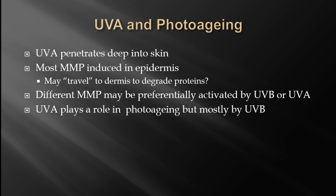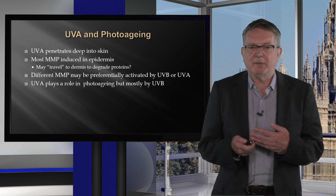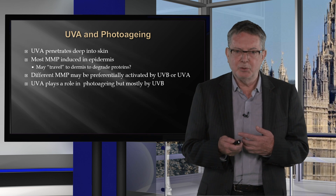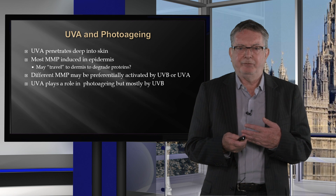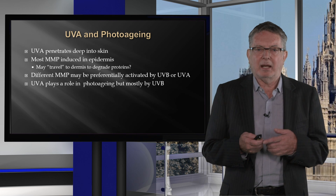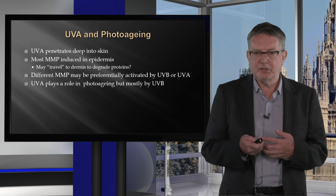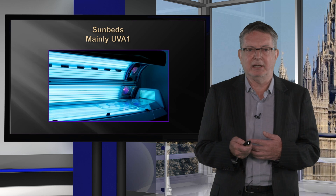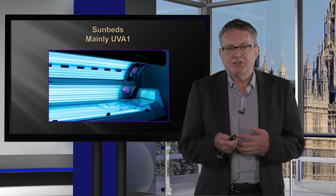UVA penetrates deep into the skin. Most MMPs are actually induced in the epidermis rather than the dermis, and these proteins travel to the dermis where they degrade collagen and elastin. Different types of MMPs are induced by UV radiation — some preferentially by UVB, some by UVA. While UVA plays a role in photoaging, most of the damage is likely caused by the UVB component of sunlight.